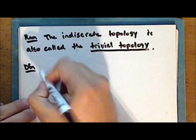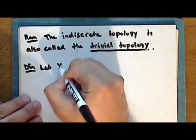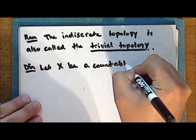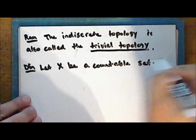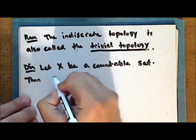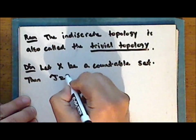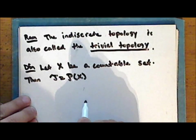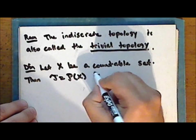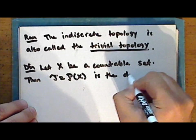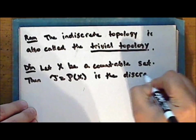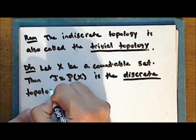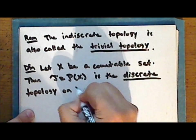Now a new definition. Let X be a countable set. Then the collection of subsets consisting of the power set of X — that is, every possible subset of the given set X — is the discrete topology on the set X.